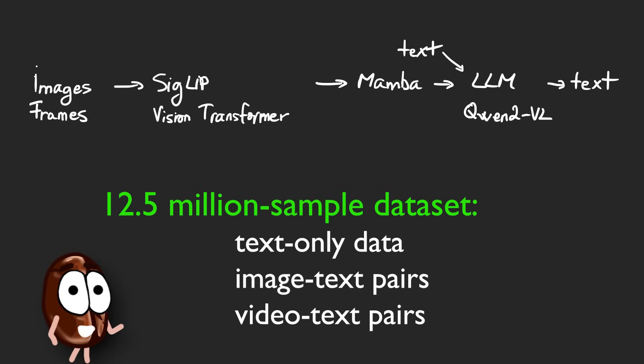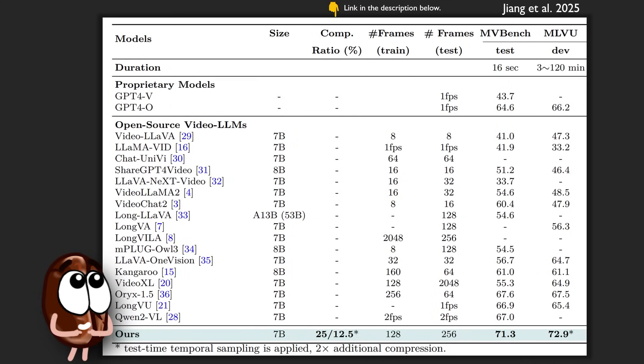All right, so how well does Storm perform? Let's start with MVBench, a benchmark designed to test temporal reasoning over short videos—just 16 seconds long. It includes multiple choice questions about actions, object interactions, and scene transitions. Storm beats Qwen-2-VL and even outperforms GPT-4 Omni.